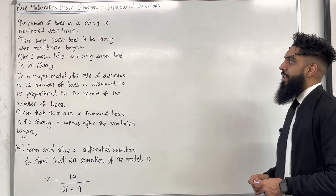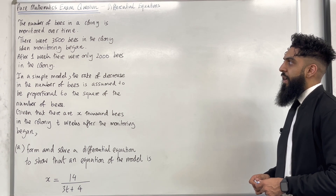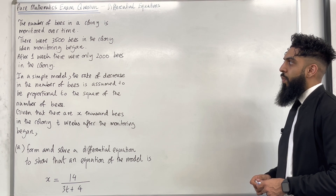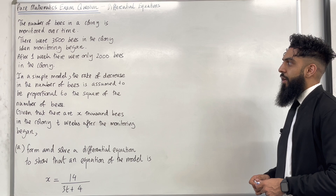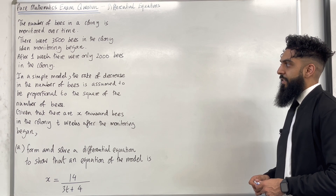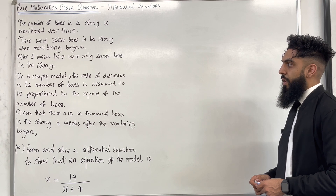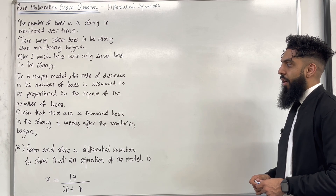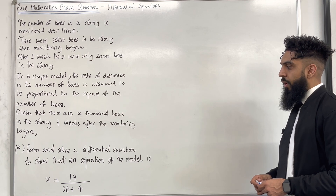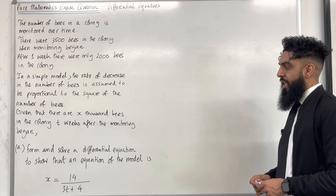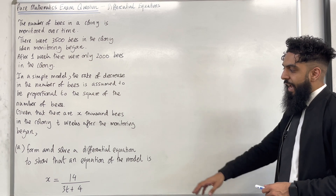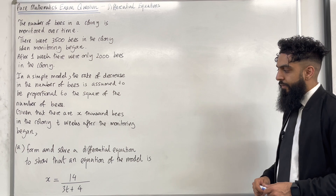The number of bees in a colony is monitored over time. There were 3,500 bees in the colony when monitoring began. After one week, there were only 2,000 bees in the colony. In a simple model, the rate of decrease in the number of bees is assumed to be proportional to the square of the number of bees. Given that there are x thousand bees in the colony two weeks after monitoring began, part A: form and solve a differential equation to show that an equation of this model is x equal 14 over 3t plus 4.